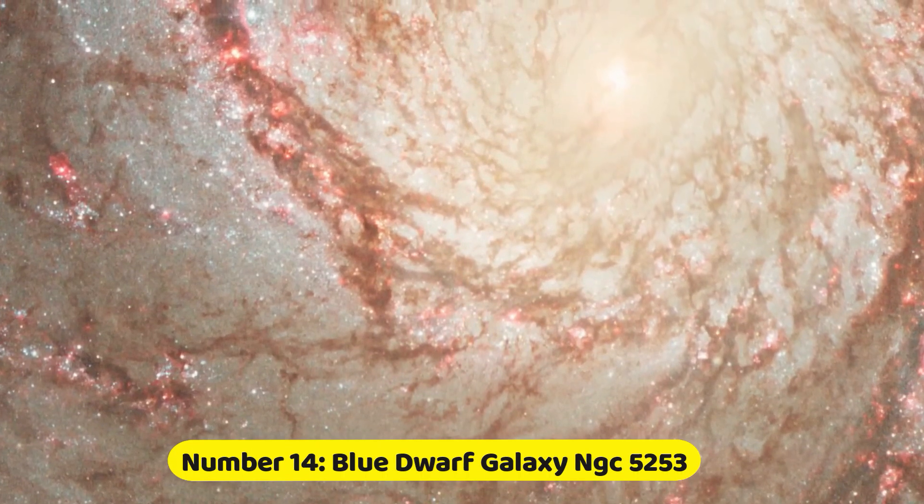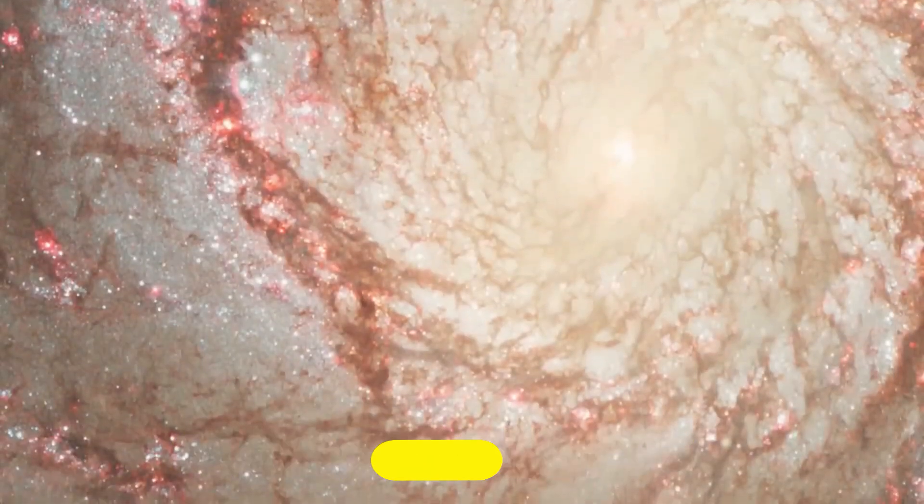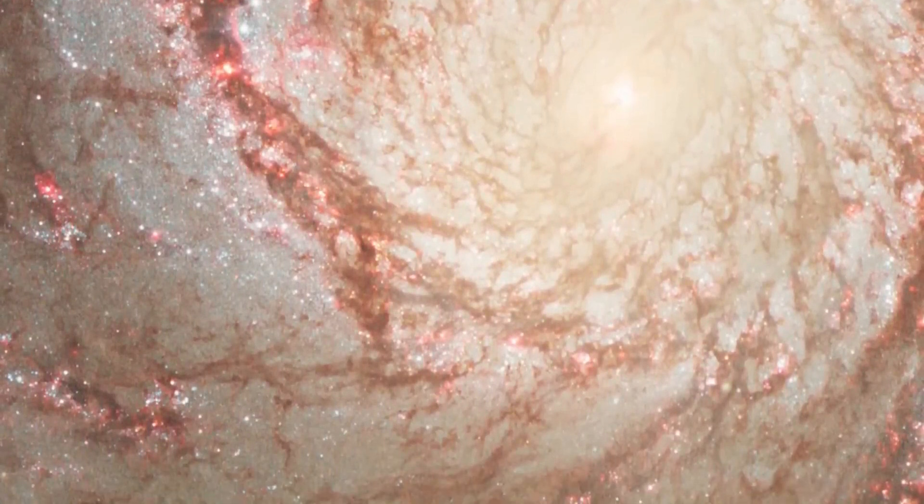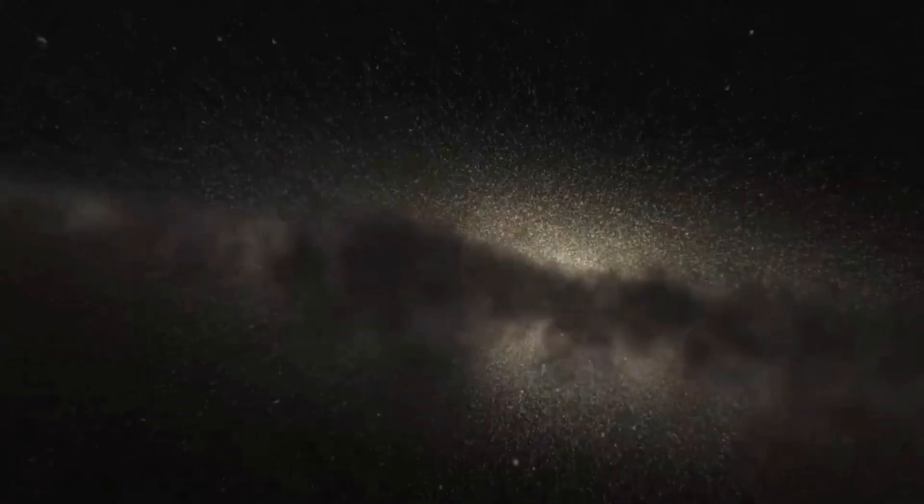Number 14. Blue Dwarf Galaxy NGC 5253. A blue-compact dwarf-starburst galaxy in the constellation Centaurus is relatively nearby at a distance of about 12 million light-years.